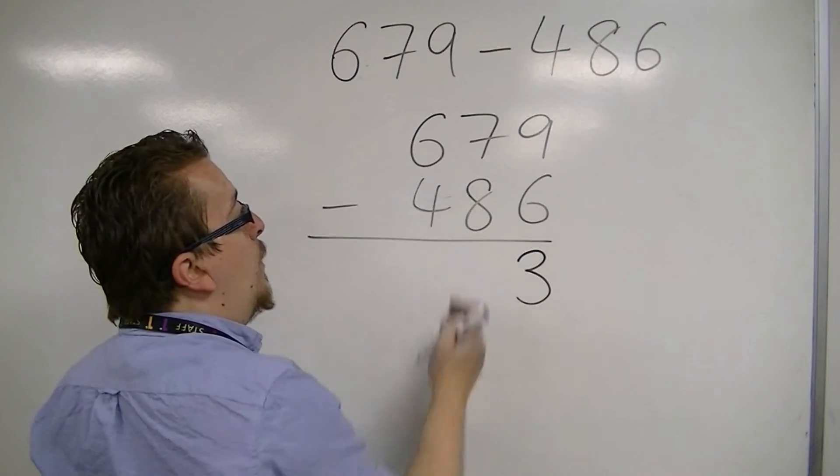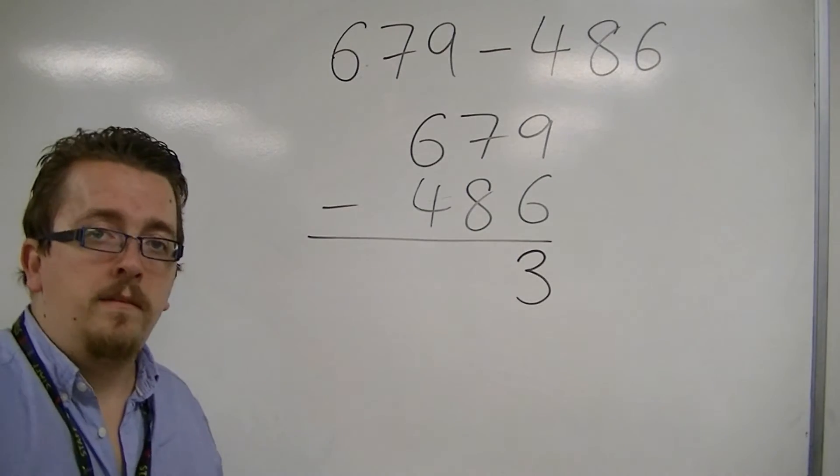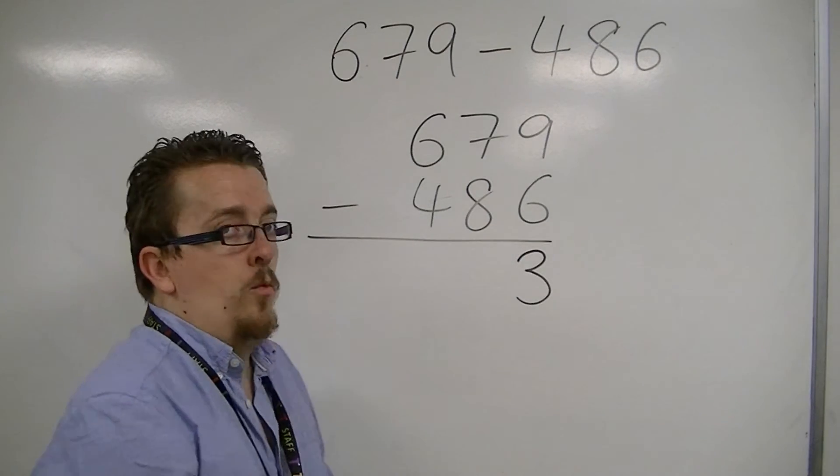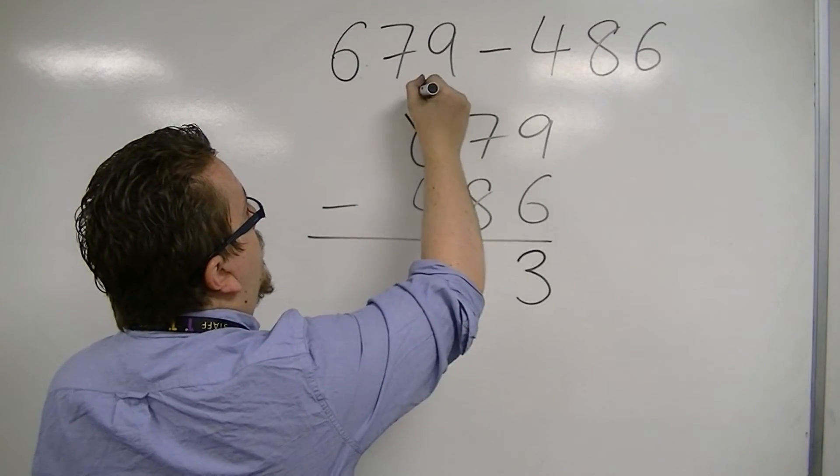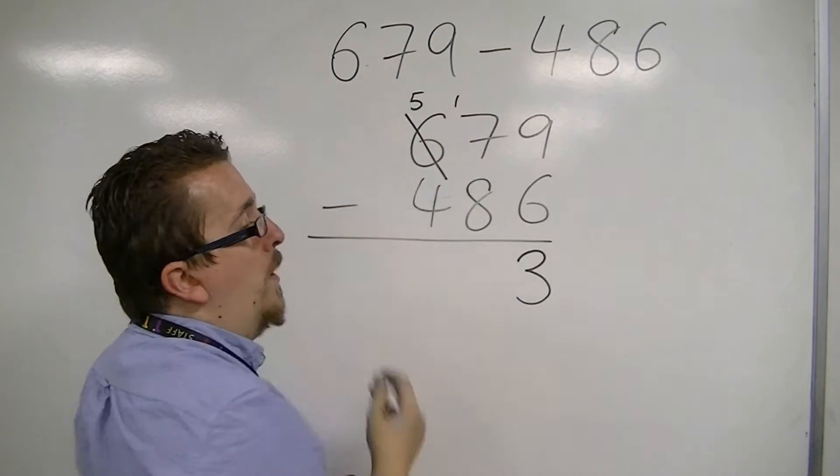7 take away 8 is where we get into tricky waters. So we're going to have to borrow 1 from the 6. The 6 reduces to 5, add the 1 onto the 7.